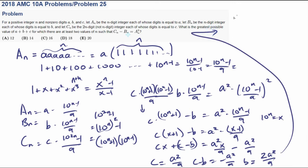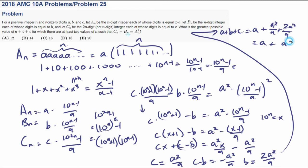From here, we're trying to find A plus B plus C, which equals A plus 2A squared over 9 plus A squared over 9, which simplifies to A plus A squared over 3. You have to be careful because B and C must be integers, and since C equals A squared over 9, A must be a multiple of 3. We only have a few values of A to try.